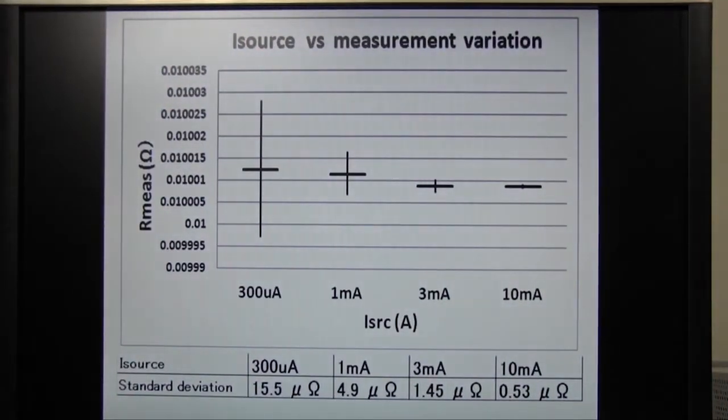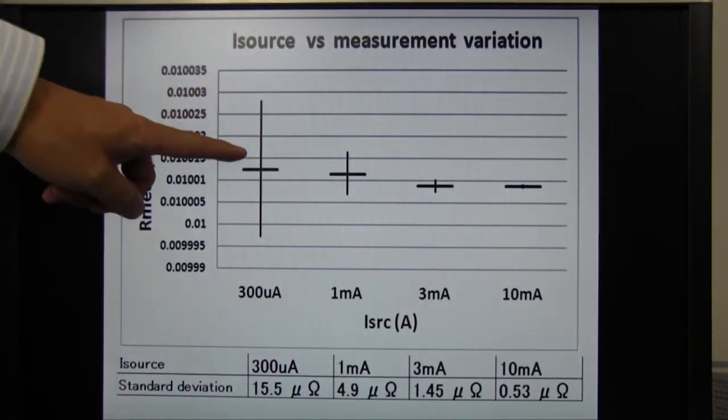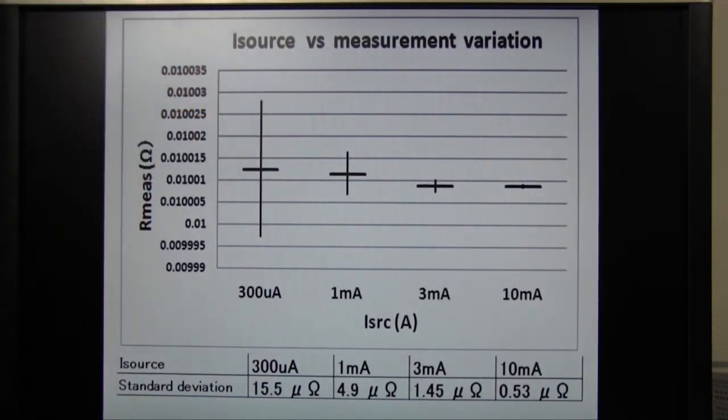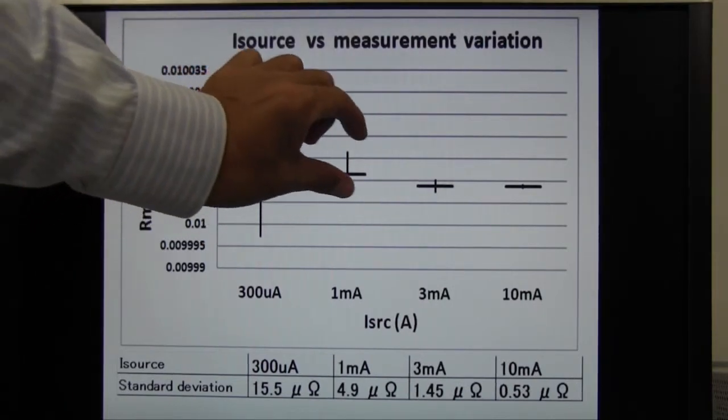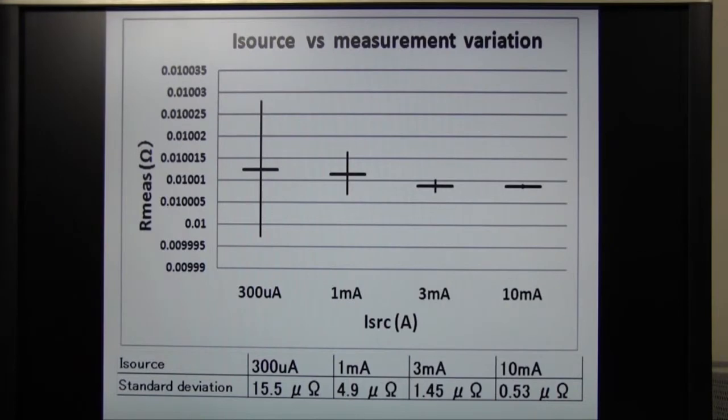This is a measurement result of 4 different force currents. The vertical bar shows the standard deviation. It shows that the standard deviation getting smaller when forcing a large current. You can set the best force current regarding the noise and the damage of the device.